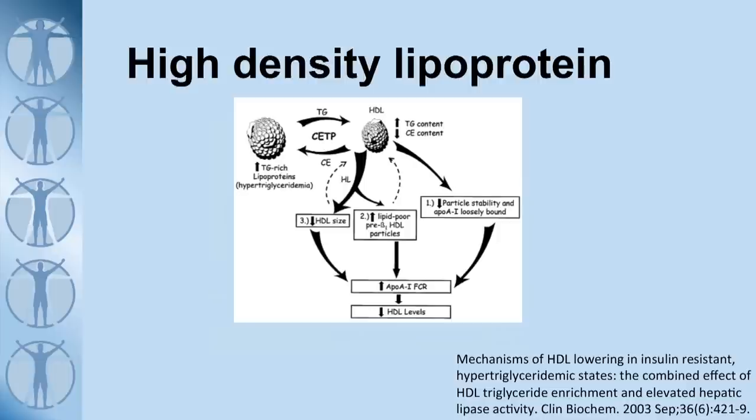Now, HDL relates to triglycerides. We know HDL is good — if you have high levels of HDL, it's a very good indicator that your risk of heart disease is reduced. The problem is that triglycerides can be taken up by HDL molecules, and through various pathways, if HDL molecules take up too much triglyceride, it leads to their breakdown and catabolism — hence a reduction in HDL. So the same mechanism that causes an increase in triglycerides also eventually leads to a reduction in your HDL level.